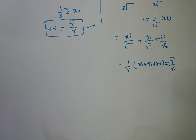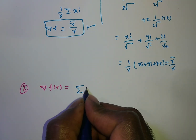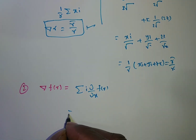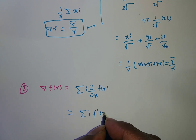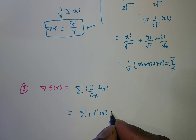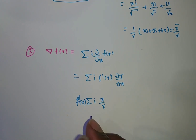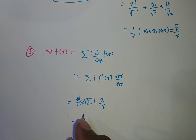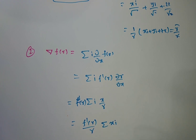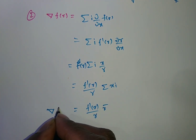Next problem: del f(r) = Σi · (∂/∂x) f(r) = Σi · f'(r) · (∂r/∂x) by chain rule. f'(r) is not a vector, so take it outside. Remaining: ∂r/∂x = x/r, as proved earlier. Taking 1/r outside as well, we get f'(r)/r · Σxi. What is Σxi? It is r̄. Therefore, del f(r) = (f'(r)/r) · r̄.